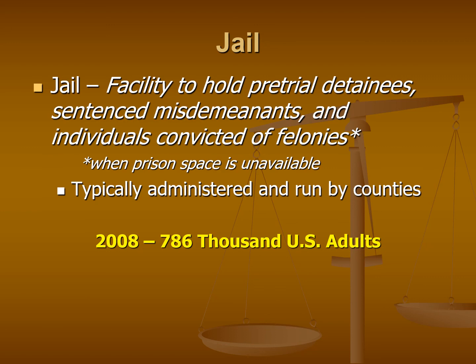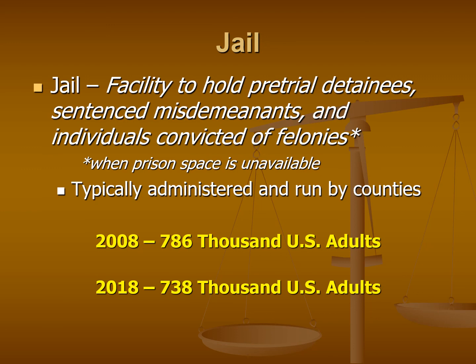What do our jail numbers look like? In 2008, there were approximately 786,000 U.S. adults in jails. By 2018, we saw a decrease — similar to the decrease in probation, though not as much. Probation saw around a 17% decrease, while jails have only seen about a 6% decrease, but we've still seen a reduction.